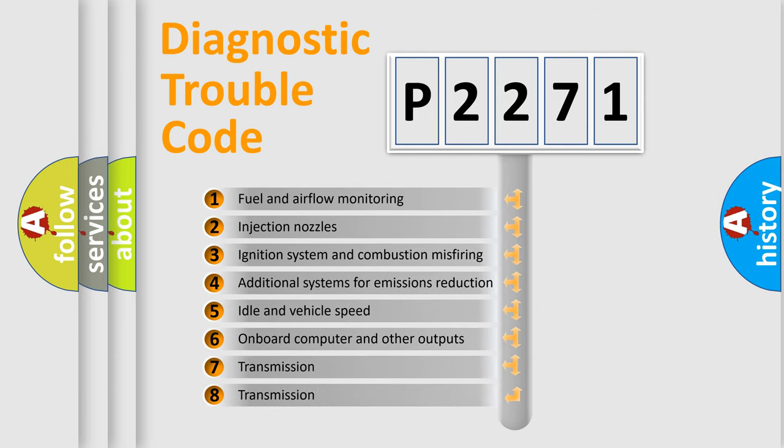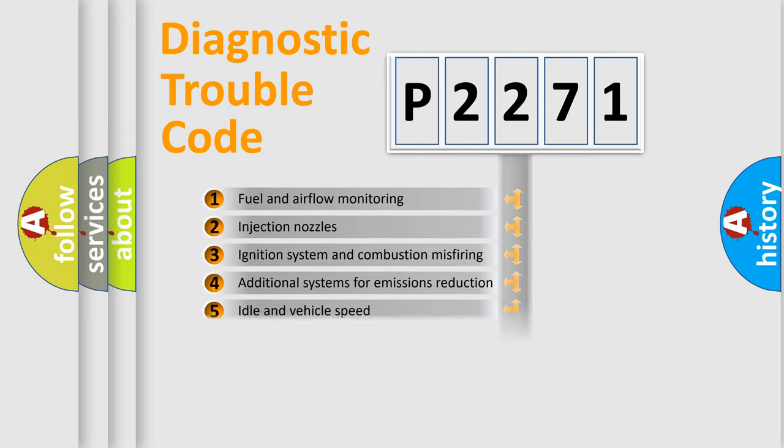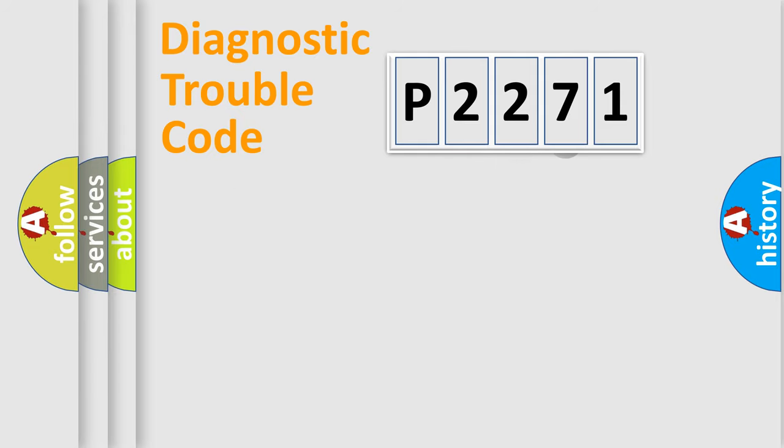The third character specifies a subset of errors. The distribution shown is valid only for the standardized DTC code.